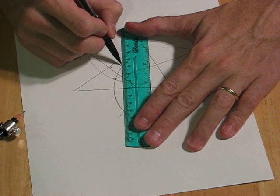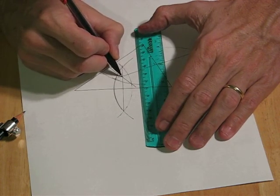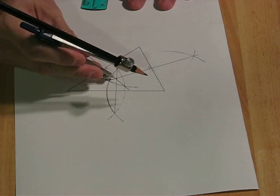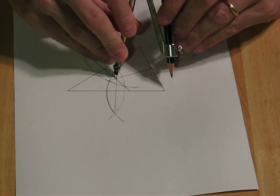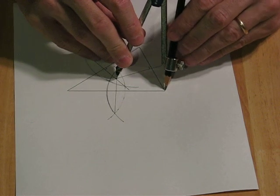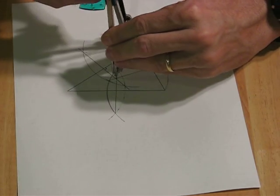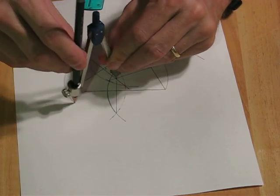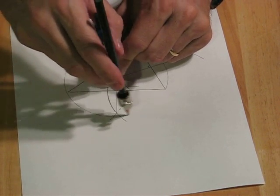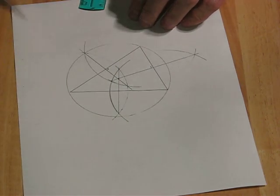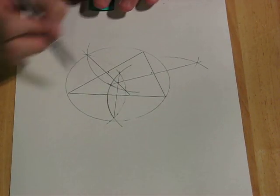Now if this were perfect, those would all intersect at the same point, and that would be the center of the circle. So you should be able to put your compass there at the center and stretch it to touch one corner, and it should make a circle that goes right through all three. And that's pretty close. It's just a little off right there, but not too bad.